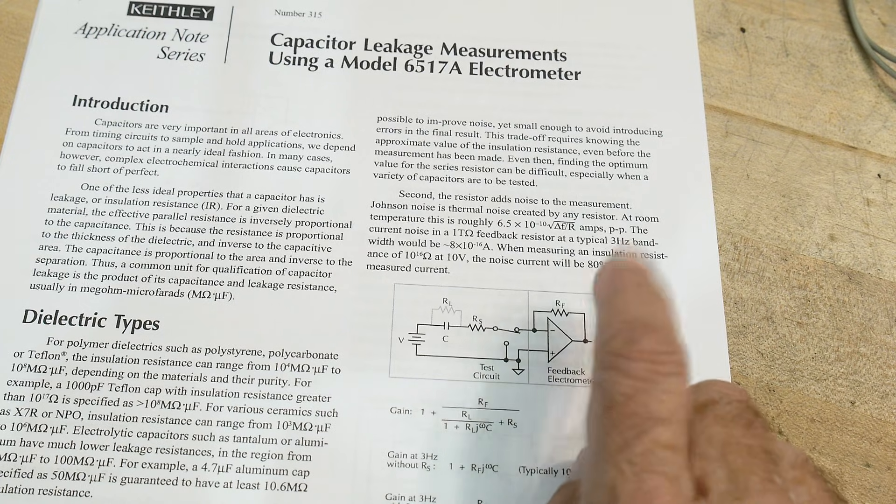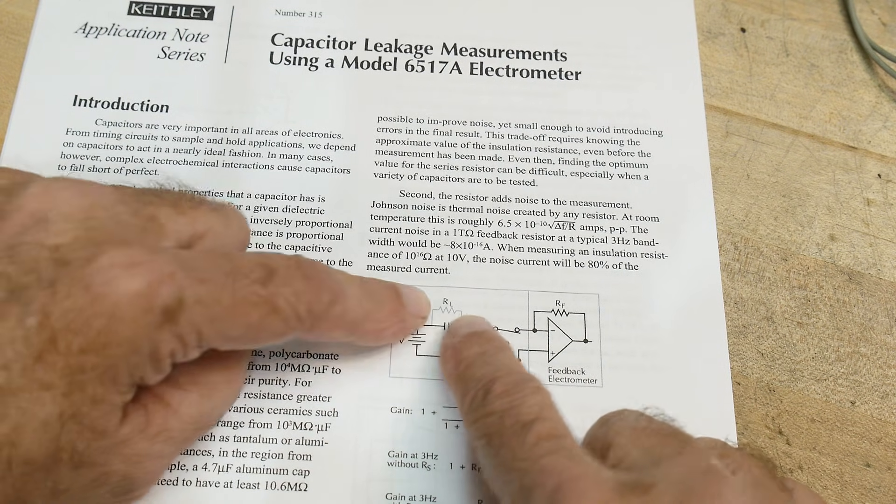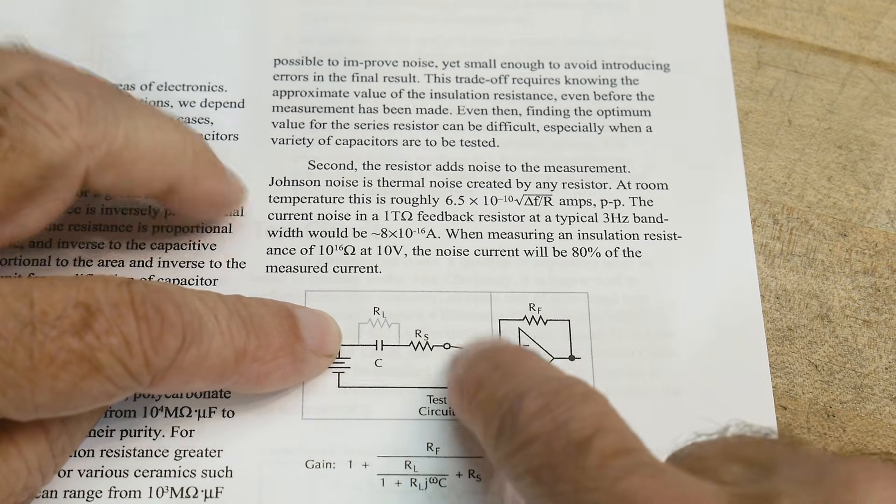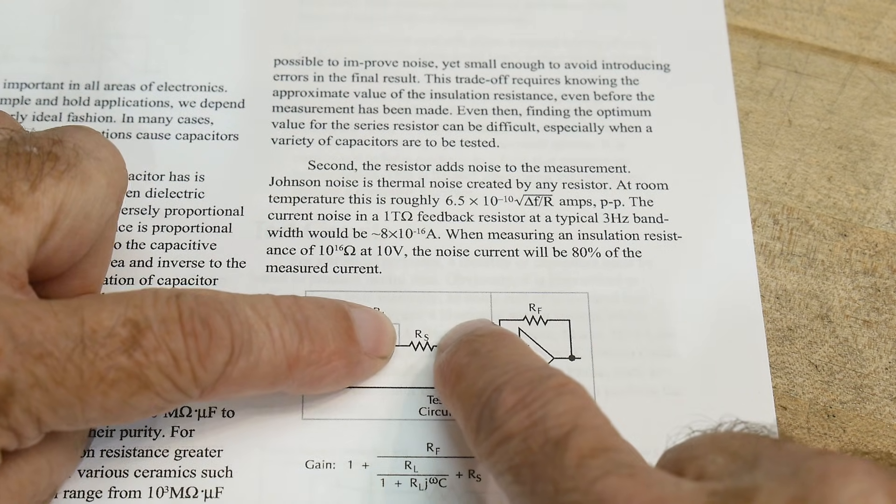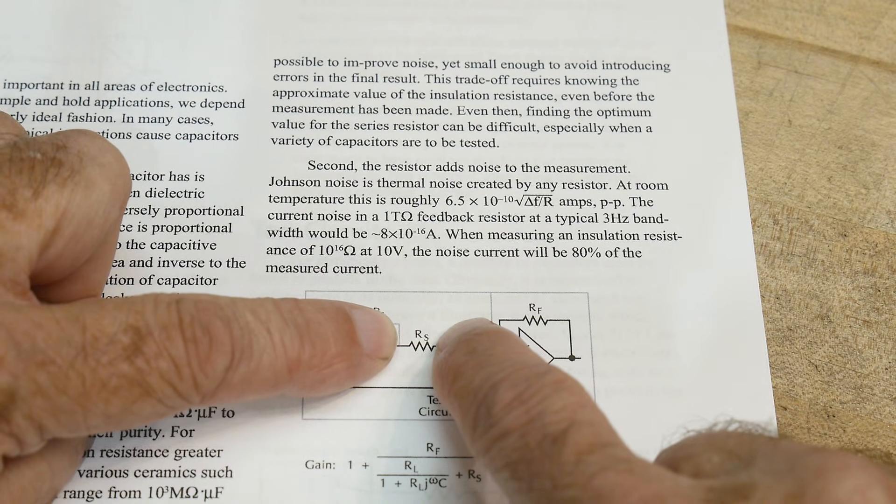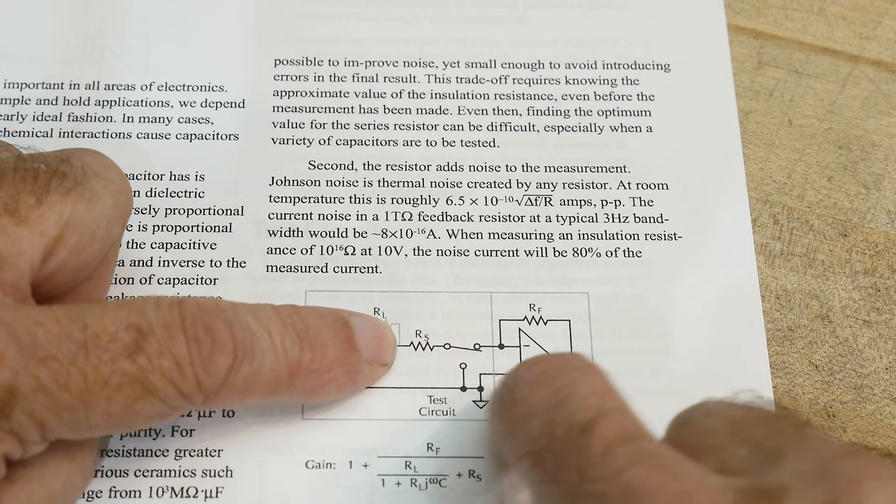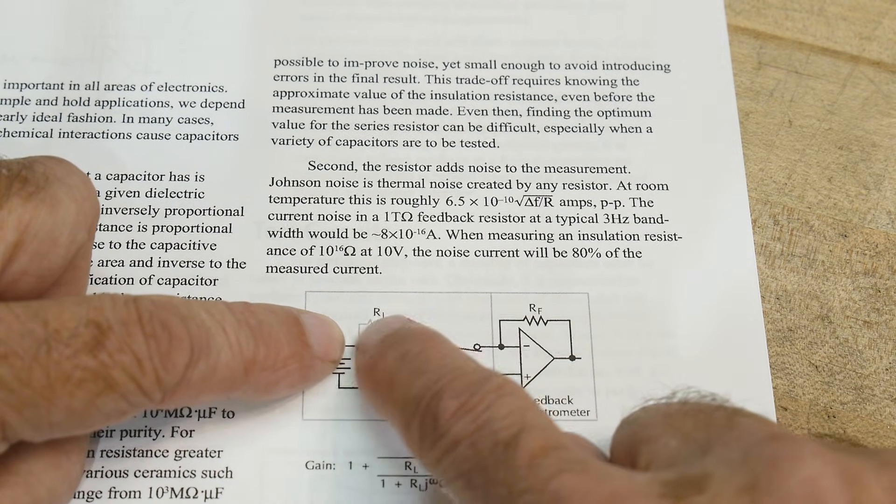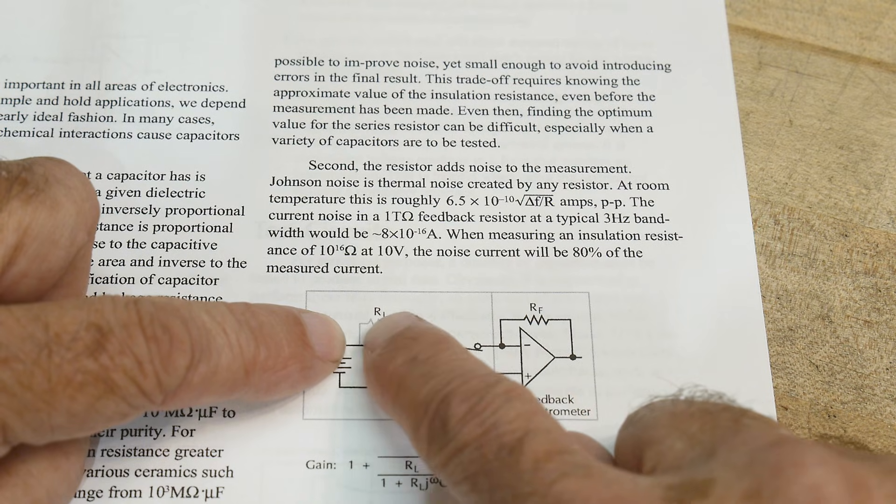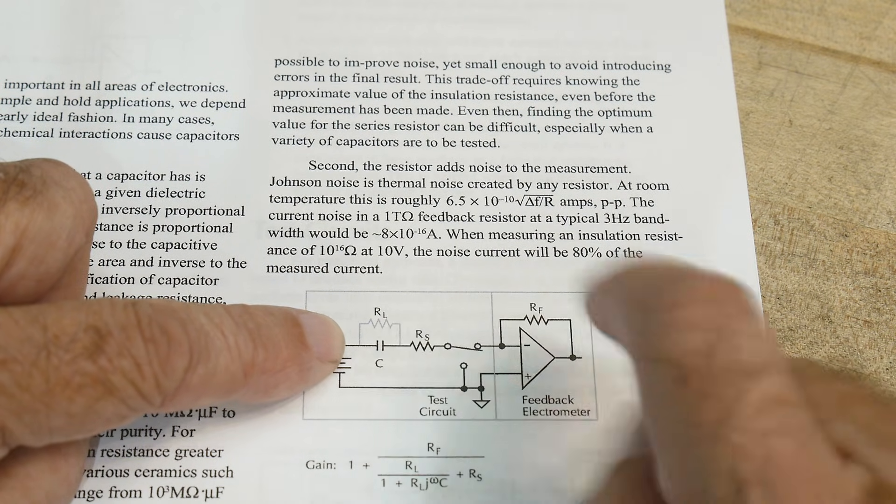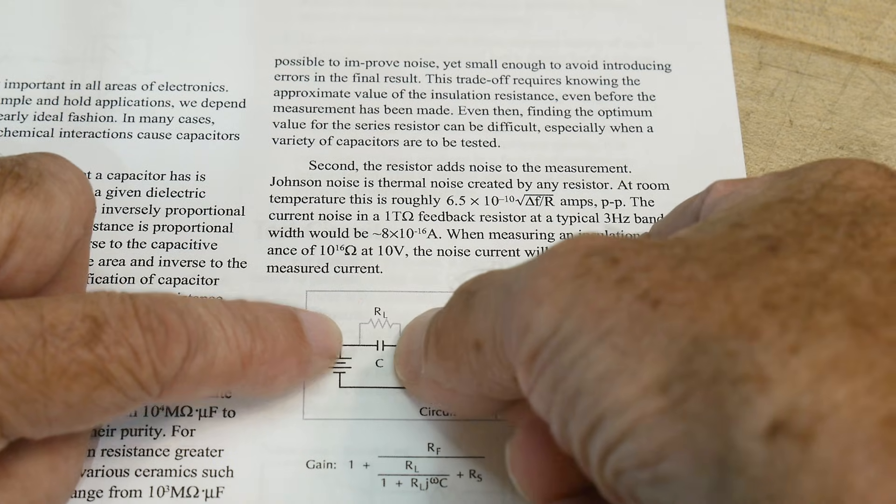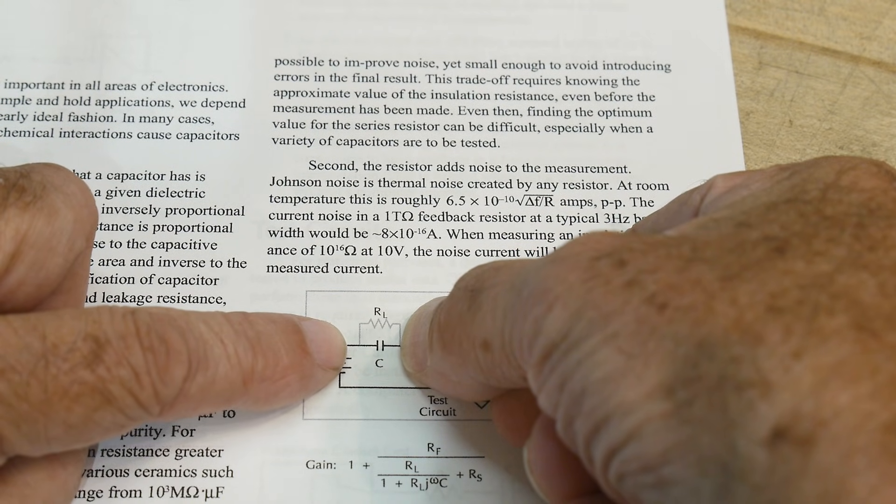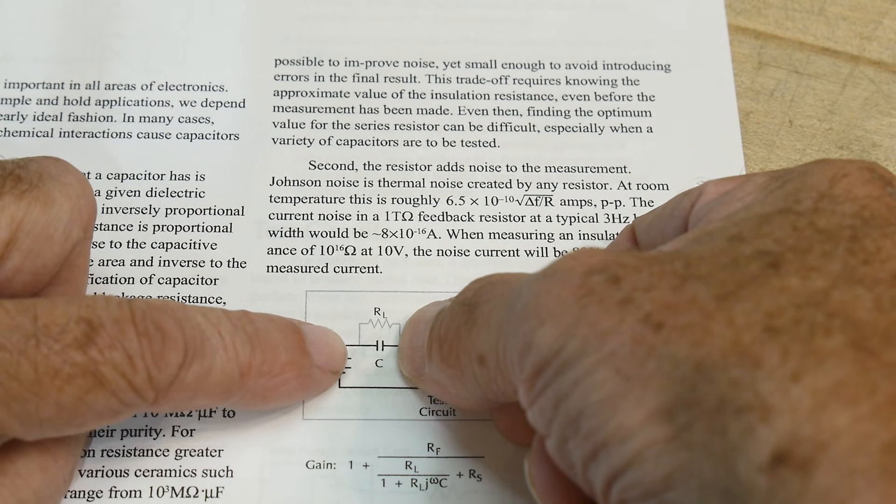So if you're lucky enough to have an electrometer, then you can just put your capacitor under test into an electrometer. Now, sometimes they put a series resistor in here just in case your capacitor is shorted, you don't blow things up. But any current through the system is through that capacitor, and it just looks like a high ohmage resistor.